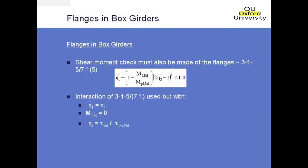The flanges in box girders: the equation shown can also be used to verify the flanges in box girders using exactly the same interaction formula. The difference here is that MF,RD should be taken as equal to zero, which means the webs are not allowed to increase the shear strength. N1 bar is replaced by N1, because there's no actual test evidence to suggest the plastic bending resistance can be used when checking a wide flange. The N3 bar value is determined as the greater value obtained from overall flange shear buckling or sub-panel buckling.